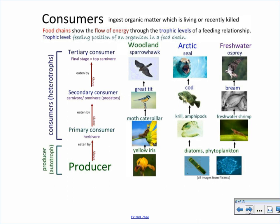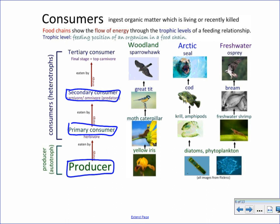Consumers are organisms that ingest organic matter and can be classified based on their position within a food chain. Producers are always at the bottom, making up the first level. The consumers that eat producers are referred to as primary consumers. When primary consumers are consumed, energy flows into secondary consumers, and so forth.